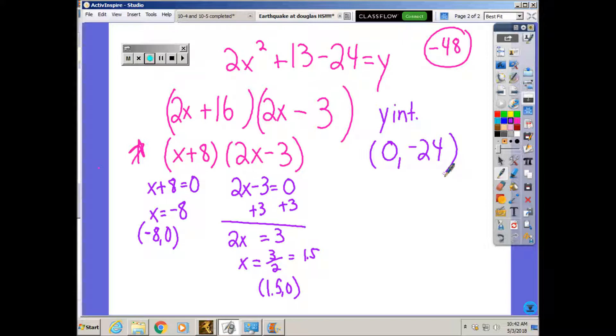Now I need to be able to do the vertex. The vertex is a formula. It's negative b over 2a. So the first thing on the EdPuzzle that I want you to do is you're going to actually type in what you got as the axis of symmetry.